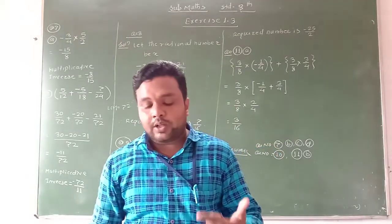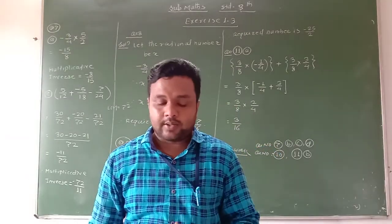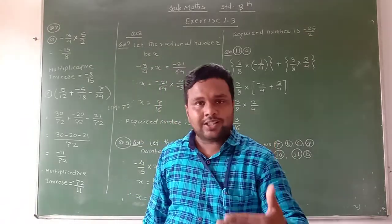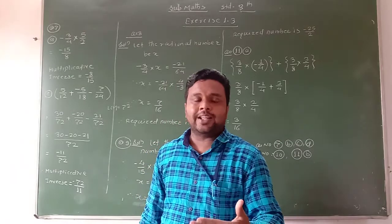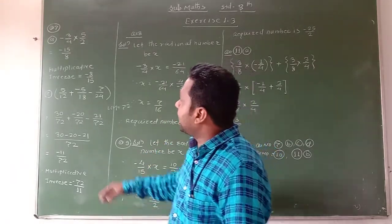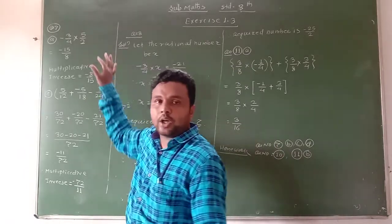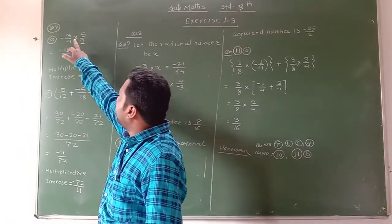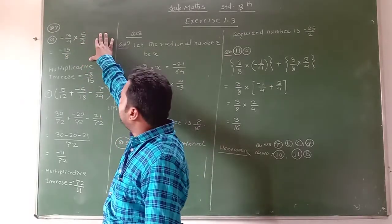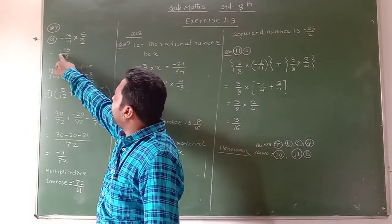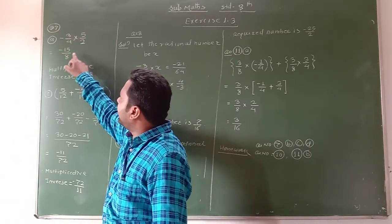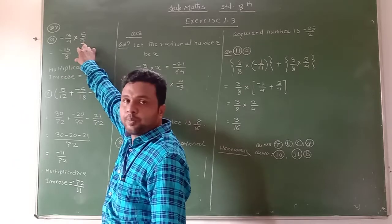Find the multiplicative inverse of the following. Now some equations are given here. We have to solve this equation first, find out the value, and then find the multiplicative inverse. Here I take the first example: the product of 2 rational numbers is given — minus 3 upon 4 into 5 upon 2. We do the multiplication: minus 3 into 5 gives minus 15, and 4 into 2 gives 8. The answer is minus 15 upon 8.